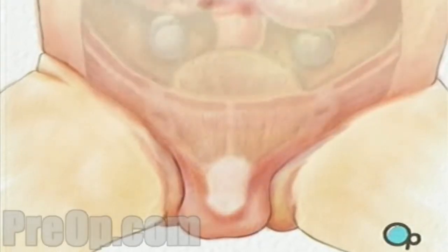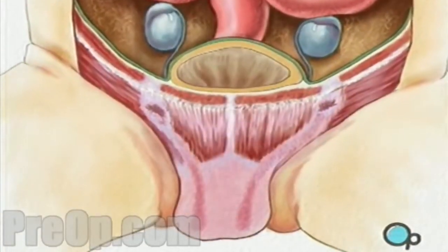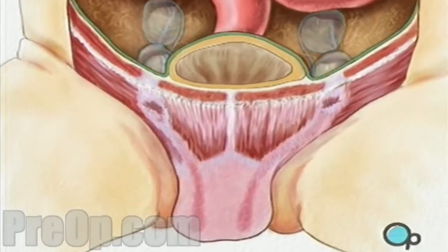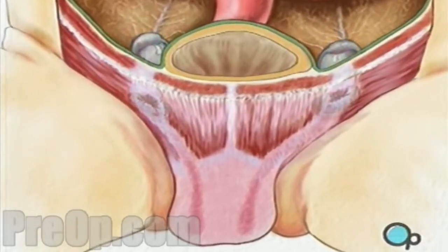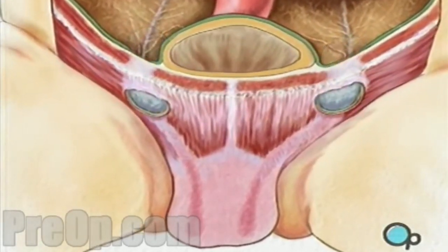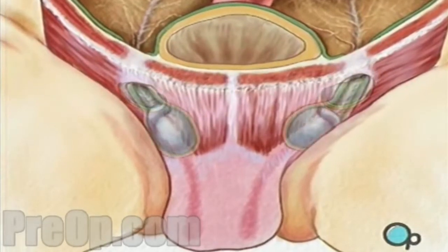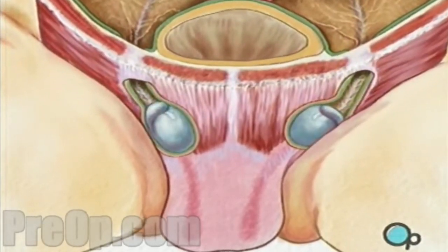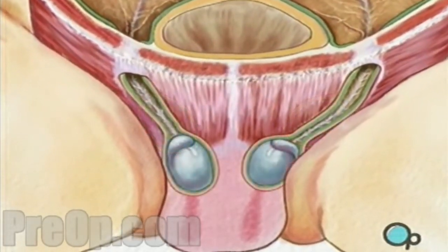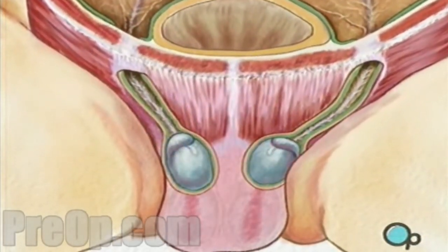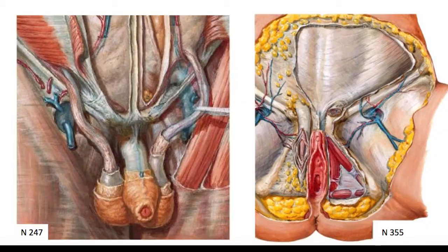Now they show the normal development of the testis. The testis goes down from the inside of the abdomen into the scrotum through the inguinal canal. The inguinal canal not only carries the testis — in men, it also contains the ilio-inguinal nerve and spermatic cord, and in females, it contains the ilio-inguinal nerve and round ligament.